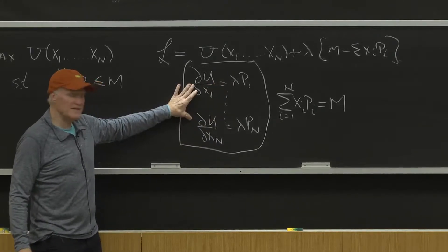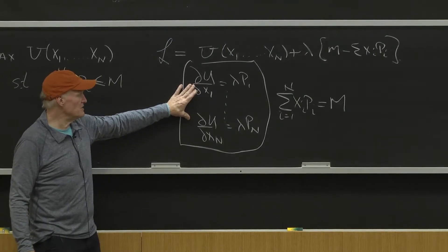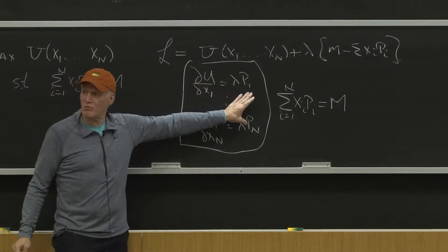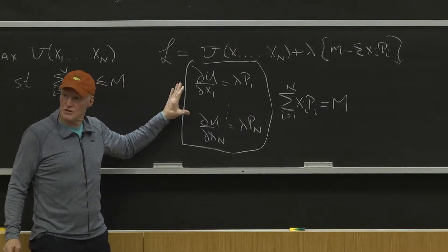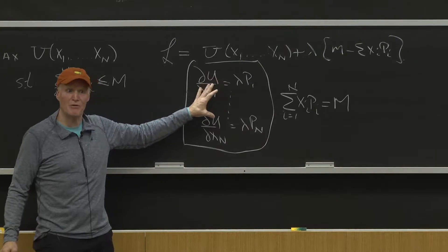First off, we don't directly see marginal utilities. So this theory says, while I don't see marginal utilities, I do see prices, and I can infer marginal utilities up to a factor of proportionality from prices. That's a really important result.